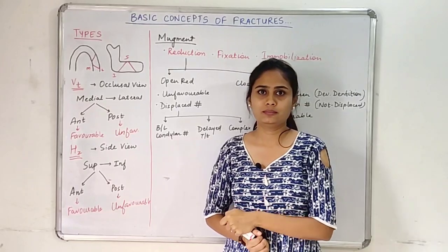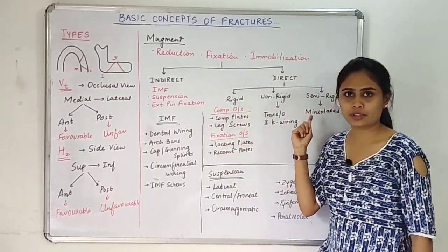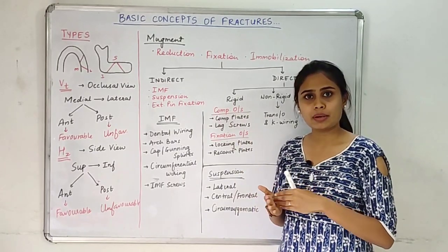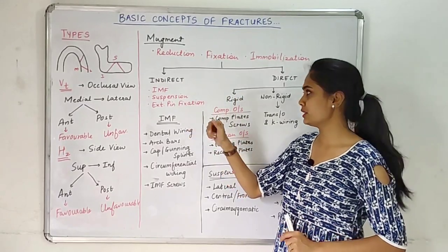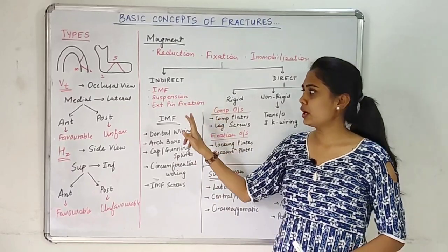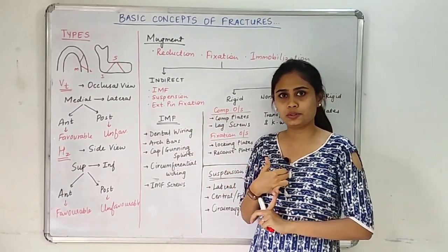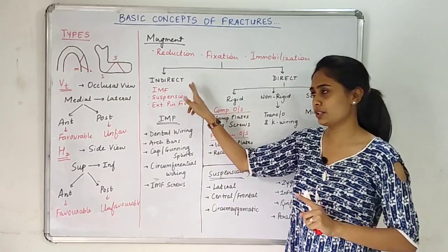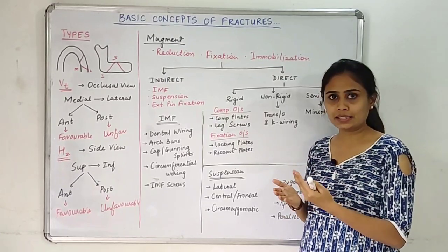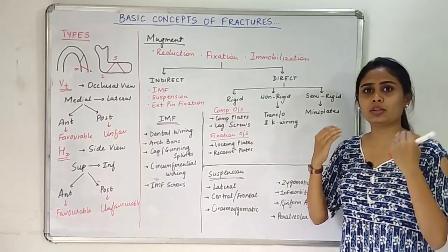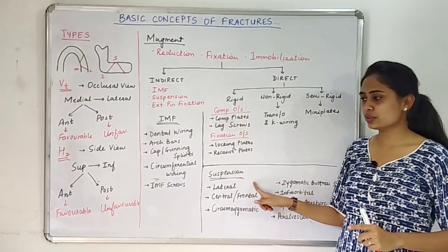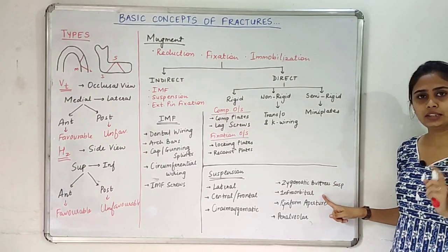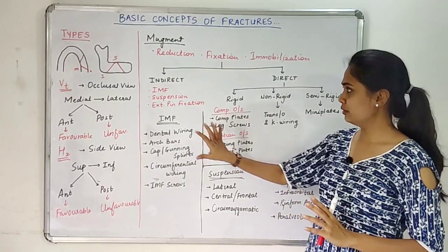Fixation is of two types: indirect fixation and direct fixation. In indirect fixation, we have three basic types: IMF (inter-maxillary fixation, also known as MMF or maxillomandibular fixation), suspension, and external pin fixation. IMF can be given via dental wiring, arch bars, cap or Gunning splints, circumferential wiring, and IMF screws. For suspension, we have craniomandibular and craniomaxillary suspension, including lateral (Adams), central or frontal, circumzygomatic, zygomatic buttress, infraorbital, piriform aperture, and peralveolar methods.